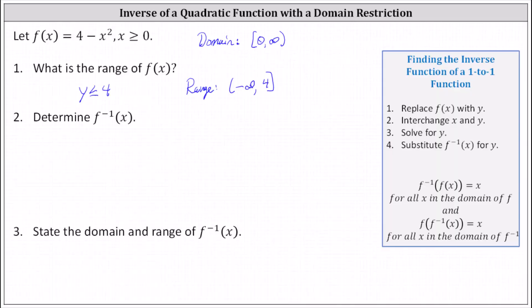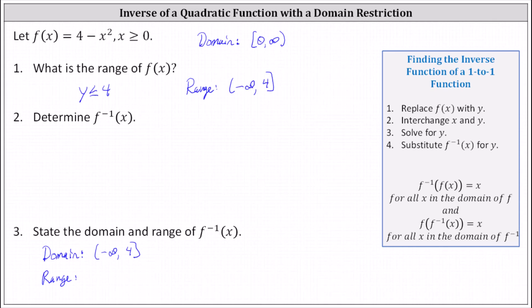Number two, we're asked to determine f inverse of x. Before we do that, let's address number three, which asks us to state the domain and range of f inverse of x. If we know the domain and range of f of x, then the domain and range are interchanged for f inverse of x. This means the domain of f inverse of x is the same as the range of f of x, which is the interval from negative infinity to four, closed on four. And the range of f inverse of x is the same as the domain of f of x, which is the interval from zero to infinity, closed on zero.